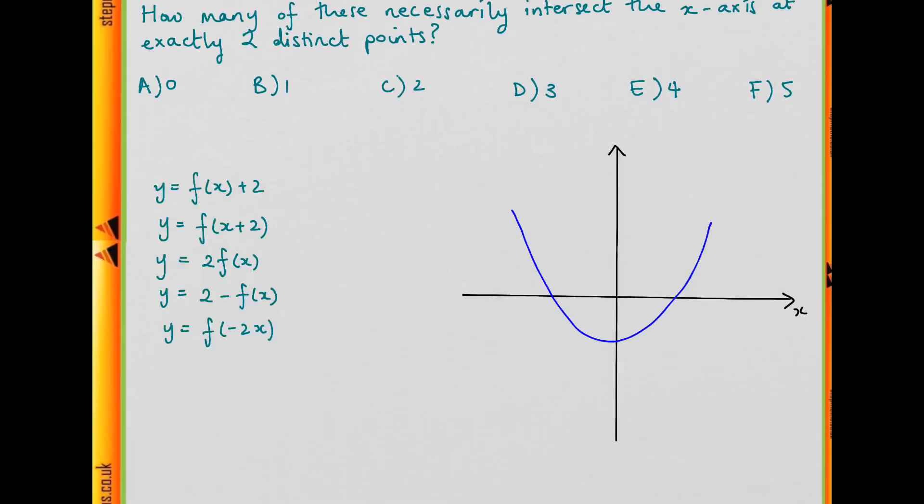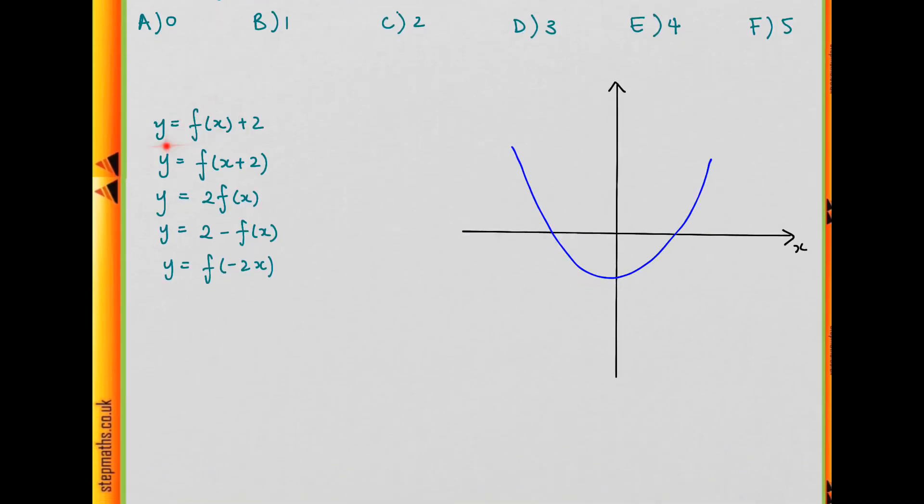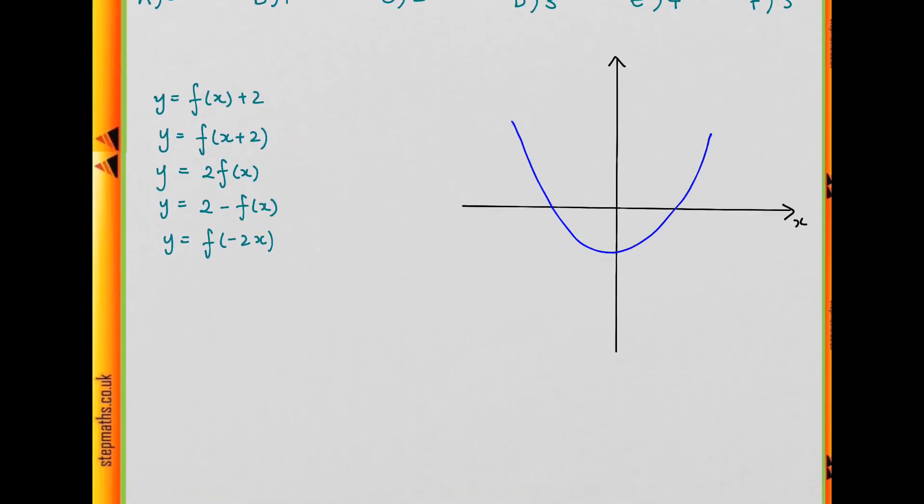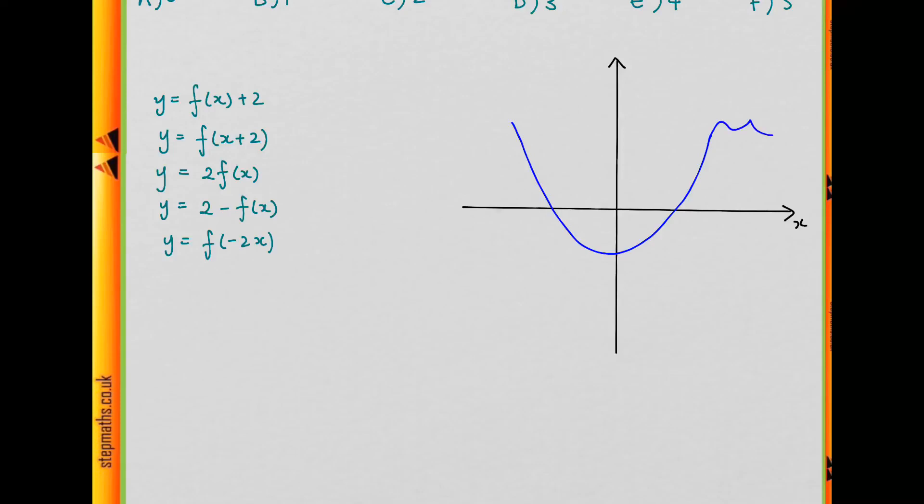These are a list of functions that we're considering, and our graph is going to look somewhere like this around the points where it intersects the x-axis. It doesn't really matter what it does after that, but we know it doesn't cross the x-axis again because it only crosses in two places.